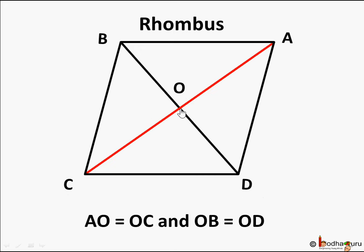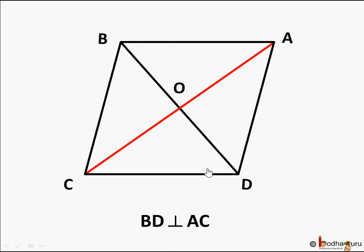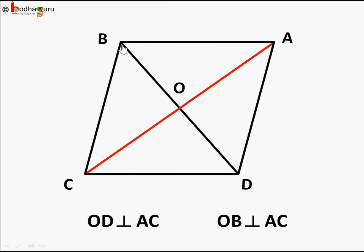Now let's take a very specific quadrilateral called a rhombus. We know a rhombus has all four sides equal. It has one more property: its diagonals BD and AC meet at the center point O such that AO equals OC and BO equals OD. One more interesting property of a rhombus is that the two diagonals are perpendicular to each other — they meet at 90 degrees. So BD is perpendicular to AC.